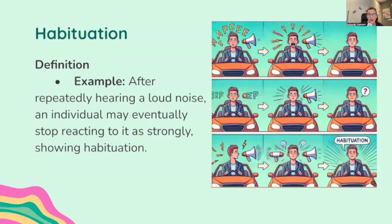Now let's talk about habituation. The definition of habituation is a decrease in response to a stimulus after repeated exposure to it. For example, after repeatedly hearing a loud noise, an individual may eventually stop reacting to it as strongly. If there's a loud sound and you jump, after hearing that sound all the time you're going to react less abruptly — you're not going to be jumping so much. You become familiar with it; you are habituated to it.